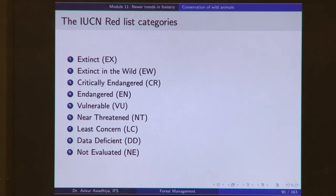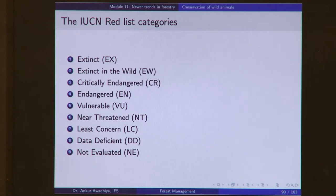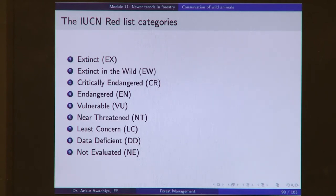After 'extinct in the wild', we have critically endangered species, which are slightly less threatened. Then we have endangered, vulnerable, near threatened, and least concerned species. Least concerned species are found in such large numbers that there is no conservation concern — examples include cows, buffaloes, dogs, and cats that are domesticated or cared for as pets. There are also species with insufficient data and species not yet evaluated. These are the nine IUCN categories. When conserving wild animals, we need to know which animal belongs to which category, so we can prioritize our attention accordingly.